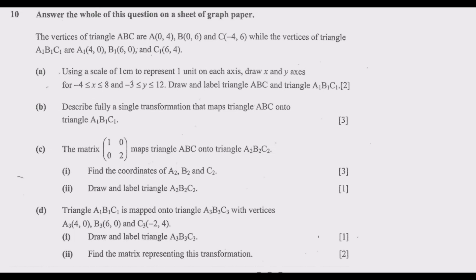Let us look at question 10, which is from transformation. Answer all of this question on a sheet of graph paper. The vertices of triangle ABC are A(0,4), B(0,6), C(-4,6), while the vertices of triangle A1B1C1 are A1(4,0), B1(6,0), and C1(6,4). Question A: using a scale of one centimeter to represent one unit on each axis, draw X and Y axes where X is between -4 and 8, and Y is between -3 and 12. Draw and label triangle ABC and triangle A1B1C1 — that's two marks.